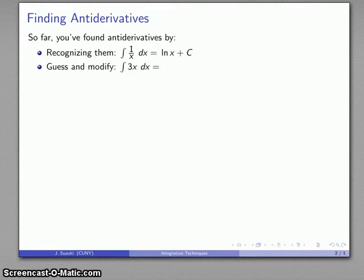Or we can do guess and modify. So the antiderivative of 3x, well, that's an x raised to the first power, so I'm guessing there's going to be an x squared in the antiderivative, but if I differentiate x squared, I get 2x, not 3x. So I have to modify that by multiplying through by a constant. Again, don't forget that constant of integration.